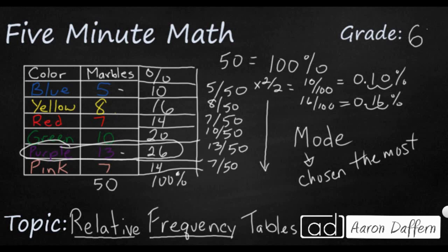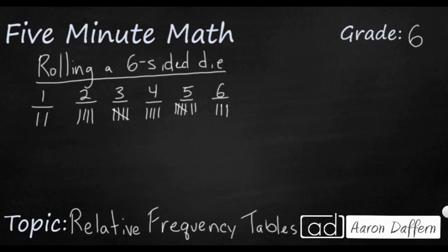Now let's give you a chance to try it out. Sometimes you might see information in a simple tally format. So go ahead and take a moment, pause the video, and see if you can make a relative frequency table with this information. Imagine that you rolled a six-sided die 25 times, and this is what you came up with. Once you get your relative frequency table with percents, unpause the video and we'll check our work.